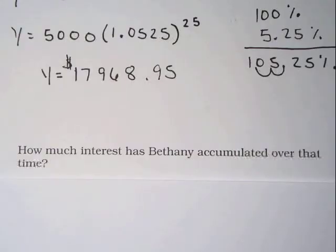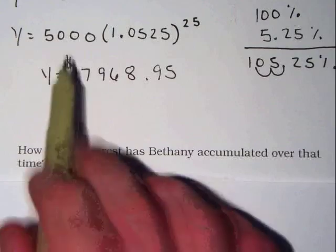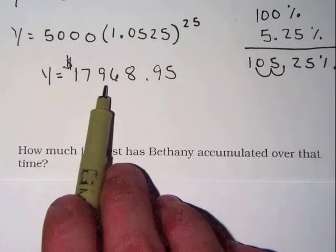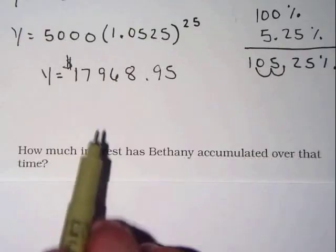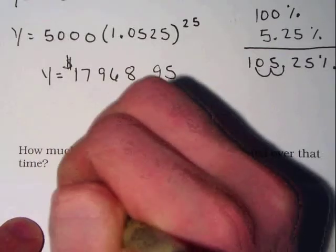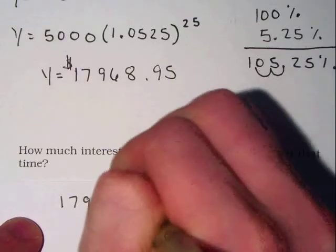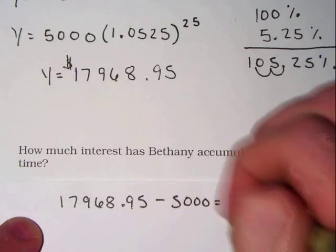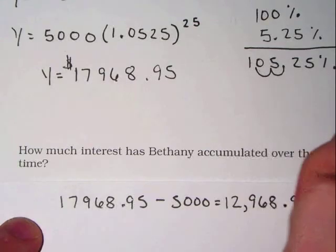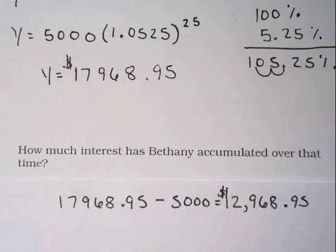The second part of our question states: how much interest has Bethany accumulated over that time? Since Bethany has not withdrawn or deposited any money during this time, all of the money earned is in the form of interest. If Bethany's initial investment was $5,000, and she now has $17,968.95, we simply subtract the values to find the interest added. When we subtract $17,968.95 minus $5,000, that equals $12,968.95. So Bethany has earned $12,968.95 in interest from the bank.